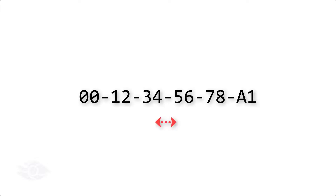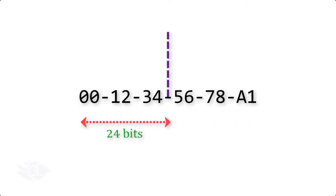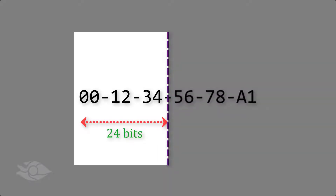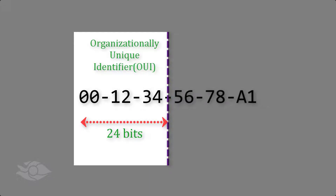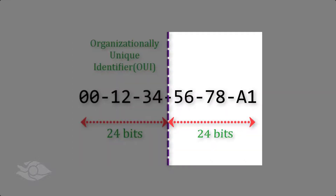Every MAC address is 48 bits long and consists of two parts. The first part is used to identify the organization that manufactured the hardware. This value is called the organizationally unique identifier. The second part, which identifies the specific hardware itself, is called the vendor code, vendor assigned value, or serial number.